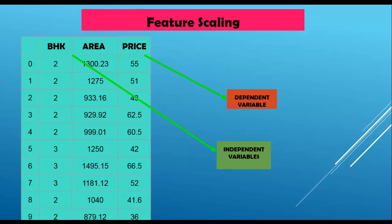Feature scaling allows us to put numerical features into the same scale. Please concentrate only on numerical features — we cannot apply feature scaling to categorical features directly. We apply feature scaling only on independent variables; in our case, BHK and area. Usually feature scaling is not required for the dependent variable. Feature scaling is performed column-wise and on each and every data point individually.